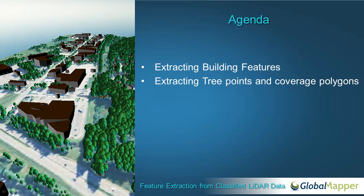Since each of those vector features gets attributes based on the point cloud, we'll get things like the coverage area, the maximum spread of the tree, and the height above ground — really creating a powerful inventory that can be used to query or summarize data. We can also take those tree points and represent them in 3D as 3D models, scaled based on the attributes of each point.